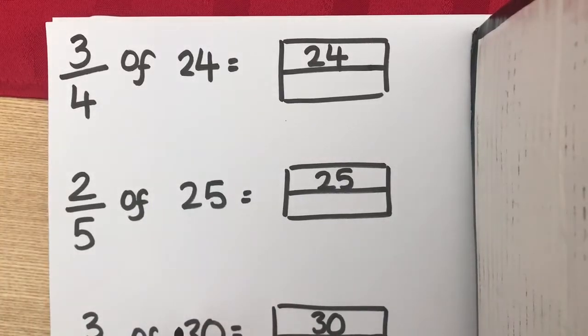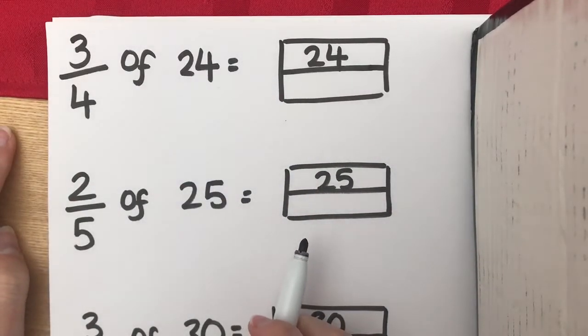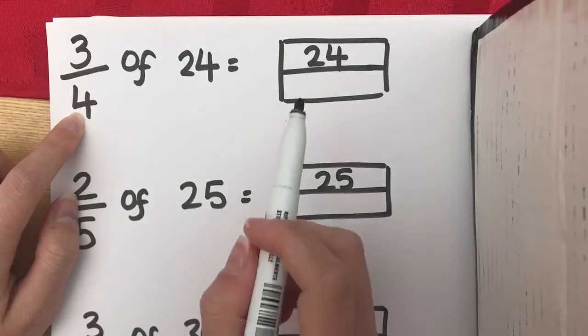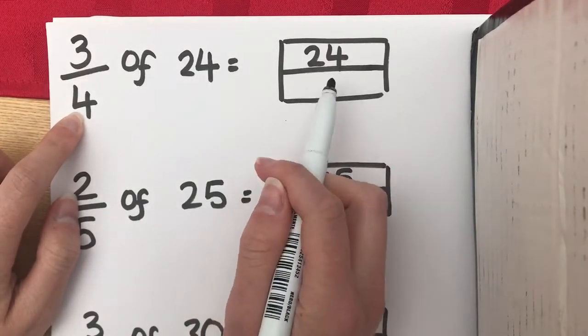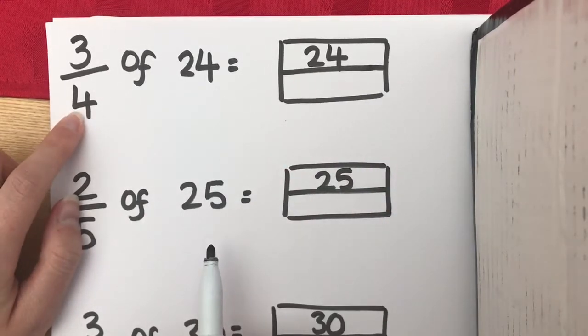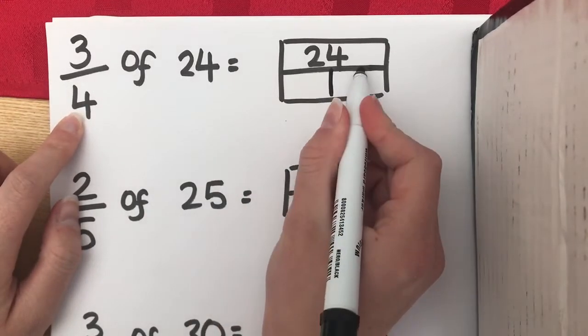Okay, so we're going to be doing fractions of amounts this time. We're using bar models to work this out because it's a really nice visual way of seeing the problem. So, if we're going to work out 3 quarters of 24, we have 24 as our whole, and our bottom bar needs to be split into 4 because that's the denominator that we're working with.